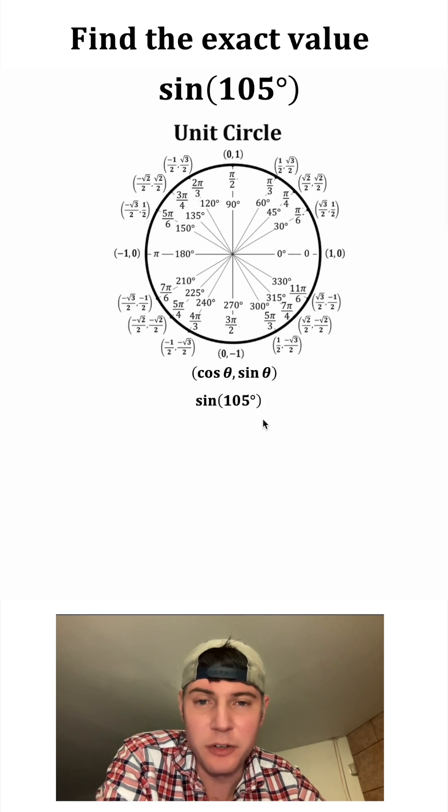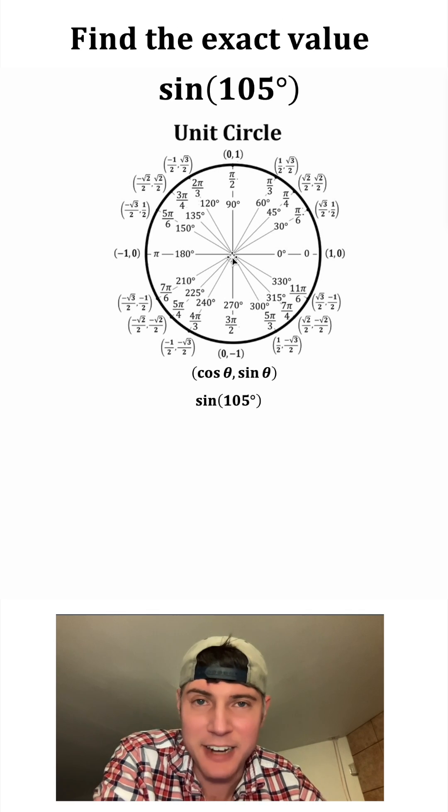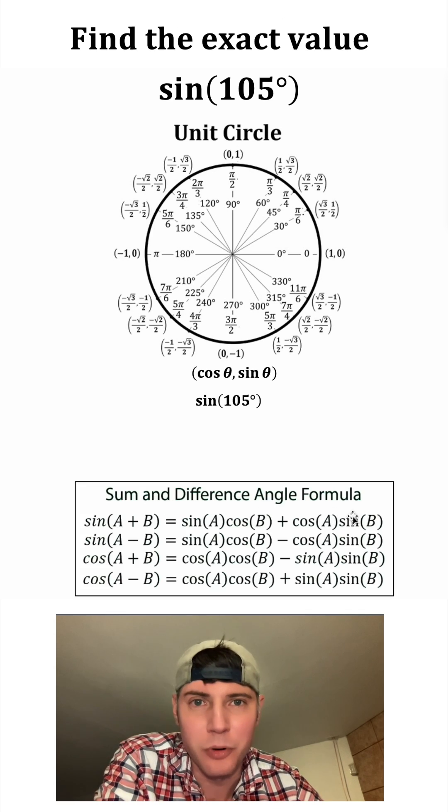Even though sine 105 degrees is not on the unit circle, we can still find an exact value for it. We're going to use the sum and difference angle formulas.